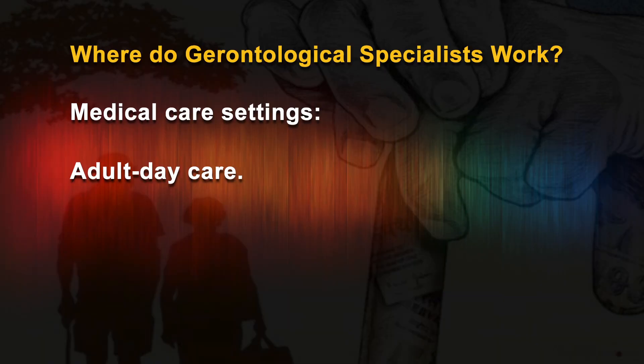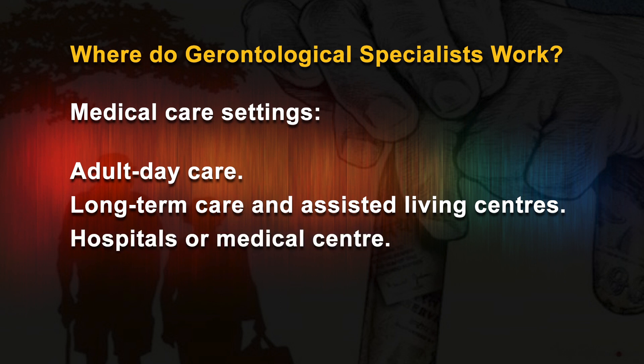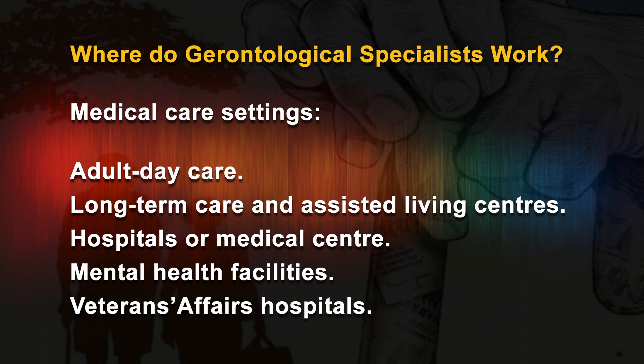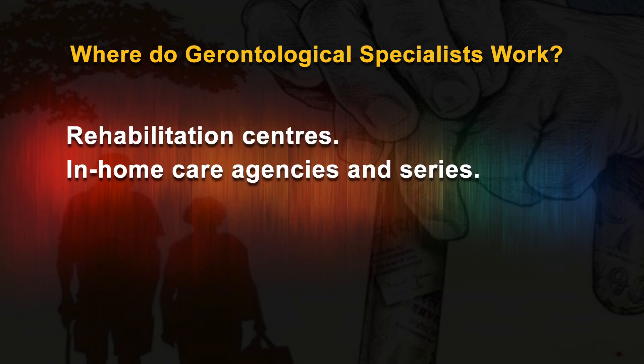Medical care settings offer both rehabilitation and residential services in institutions such as adult day care centers, long-term care and assisted living centers, hospitals or medical centers, mental health facilities, veterans affairs hospitals, rehabilitation centers, and home care agencies.